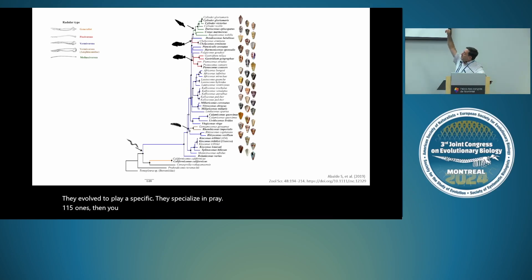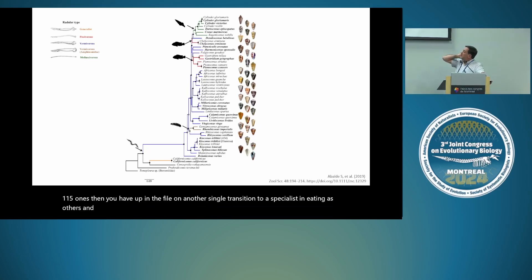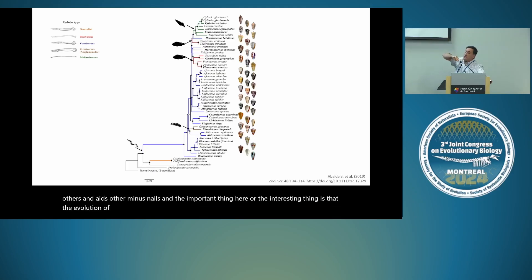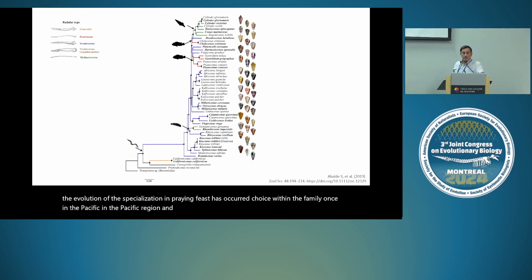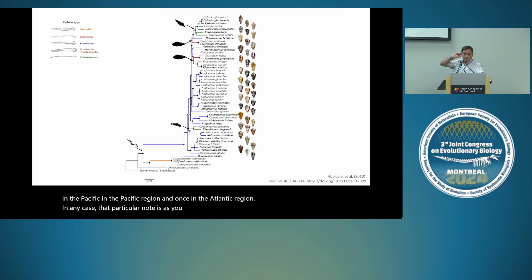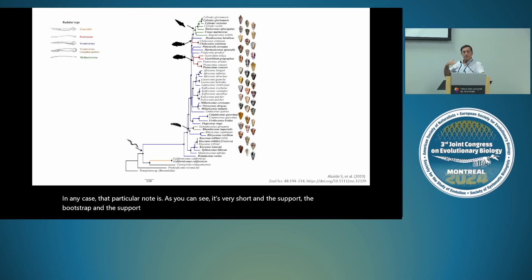Further up in the phylogeny, there is another single transition to specializing in eating other marine snails. The interesting thing is that the evolution of specialization in preying on fish has occurred twice within the family — once in the Pacific region and once in the Atlantic region. That particular node is very short, and the support is high but not maximal, so that has to be taken with caution.